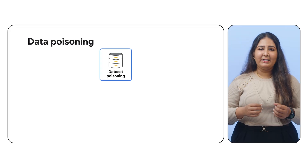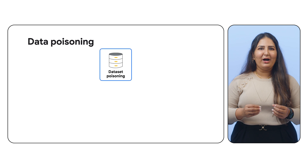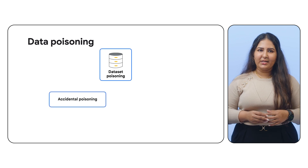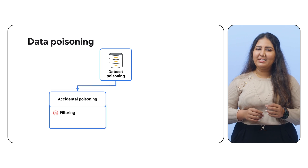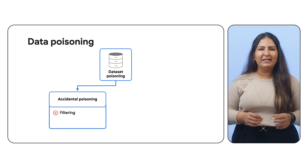Before diving into the solution, let's understand a few critical risks in the AI development pipeline. Let's begin with the datasets. Inaccurate training data, whether introduced accidentally or intentionally, makes a model predict biased or harmful content. Accidental data poisoning stems from poor data hygiene and lifecycle management. For instance, if data is not filtered properly, the model may learn from unauthorized or sensitive sources.